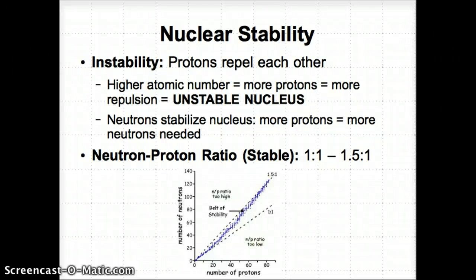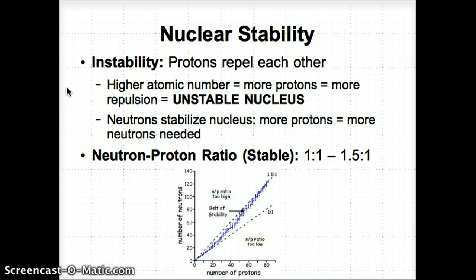This lesson is for Wednesday, October 30th, and it has to do with nuclear stability. It is the first lesson in Unit 3: Nuclear Chemistry. Let's start off by briefly reviewing what nuclear stability means. We'll be talking specifically about the nucleus of atoms and how we can analyze the inside of an atom.